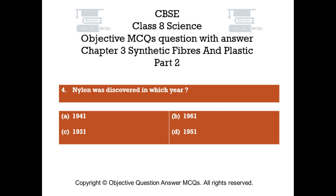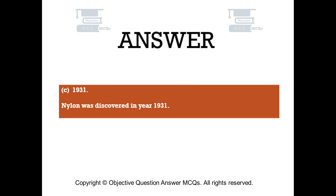Question number 4. Nylon was discovered in which year? Option A - 1941, Option B - 1961, Option C - 1931, Option D - 1951. The right answer is Option C, 1931. Nylon was discovered in the year 1931.